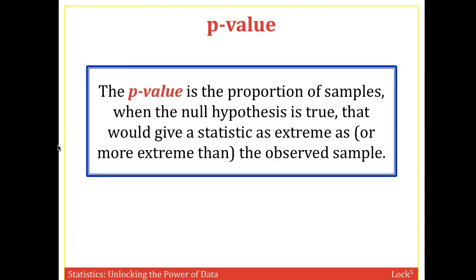The answer is the p-value. The p-value is the proportion of samples, when the null hypothesis is true, that would give a statistic as extreme as, or more extreme than, the observed sample. So the p-value is a percentage or proportion of your sample data that is as extreme or more extreme, assuming the null hypothesis is true.